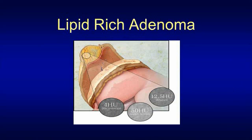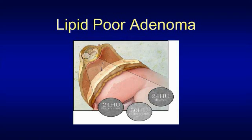Most adenomas are lipid-rich with a low density on the pre-contrast scan, but whether they are lipid-rich or lipid-poor — as in this case where the pre-contrast density is 24 Hounsfield units — adenomas take up contrast quickly and then wash out quickly from the venous to the delayed acquisition. That's all for now. The next topic I will present is when do I have to perform a gated chest CT.